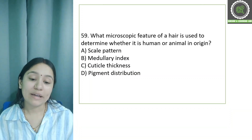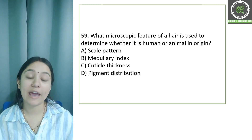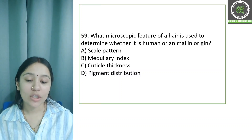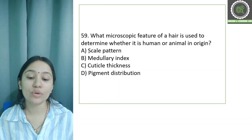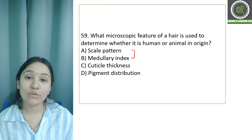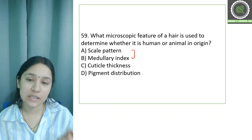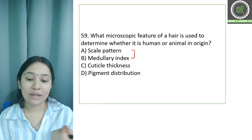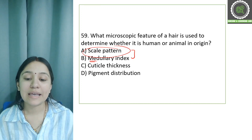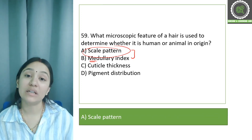Question number 59: What microscopic feature of hair is used to determine whether it is human or animal hair by origin? Options: scale pattern, medullary index, cortical thickness, and pigmentation distribution. Scale patterns are the correct answer, as scale patterns are very unique in animal hair. While medulla is mostly found in animal hair, the medullary index in human hair is very small, so scale patterns are the key distinguishing feature.